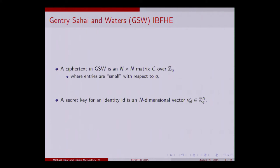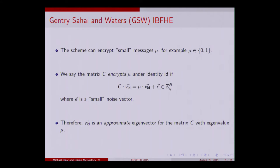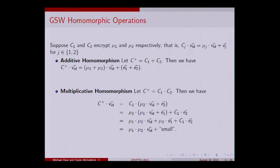We'll start with the basics of our construction, which is the GSW scheme from 2013. In GSW, a ciphertext is simply an n-by-n matrix with small entries — typically a binary matrix. A secret key for an entity is an n-dimensional vector. We encrypt small messages, typically bits in {0,1}, and we say the matrix encrypts value μ if multiplying it by the secret key vector gives a scaled multiple of the secret key vector plus some small noise vector. This can be viewed as an approximate eigenvector relationship.